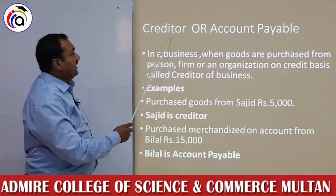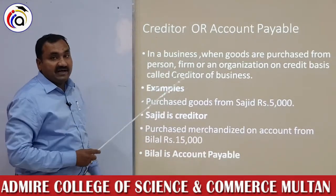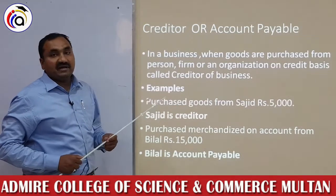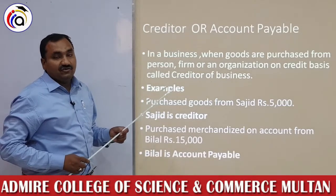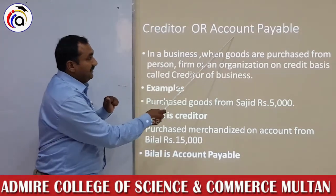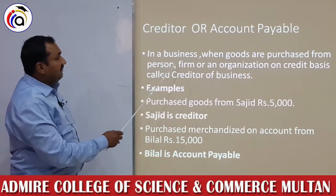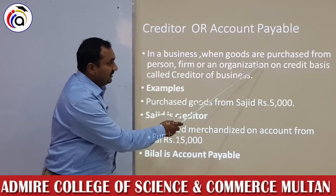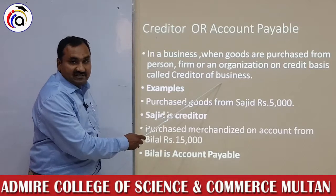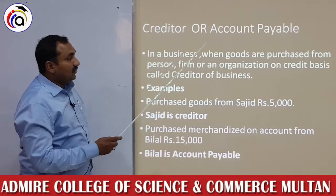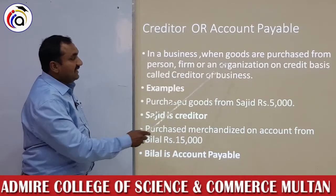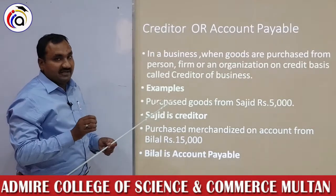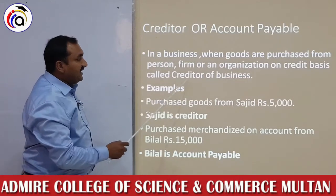Students، next ہماری term ہے creditor اور account payable۔ ابھی ہم نے پڑھا debtor اور receivable۔ کاروبار میں پیسہ وصول بھی کیا جاتا ہے اور بعد میں ادا بھی کیا جاتا ہے۔ In our business, when goods are purchased from a person, firm, or an organization on credit basis, that entity is called the creditor of the business. جب بھی ادھار پر goods خریدیں گے تو آپ کے creditor generate ہوں گے۔